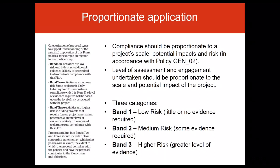For practical purposes, relevant authorities may consider it appropriate that proposals be categorised into bands to guide understanding of the level of detail likely to be required in proposal design and decision making. There are three categories of proposal types to support understanding of the practical application of plan policies, for example in relation to marine licensing. The image on screen is taken from page 11 of the plan. Band 1 activities are low risk and little or no additional evidence is likely to be required to demonstrate compliance with the plan. Band 2 activities are medium risk; some evidence is likely to be required, based upon the level of risk associated with the project. Band 3 activities are higher risk, including projects that require formal project assessment processes, and a greater level of evidence is likely to be required to demonstrate compliance with the plan.